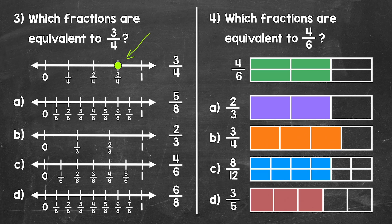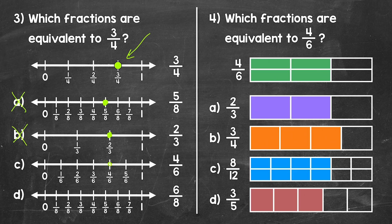Let's go to A, 5 eighths. 5 eighths is right here on the number line. Is 5 eighths equivalent to 3 fourths? Is it in the same place on the number line? No, 5 eighths is not equivalent to 3 fourths. Let's move on to B, 2 thirds. 2 thirds is right here on the number line. Is it at the same place as 3 fourths? No, it's close, but not quite. So 2 thirds is not equivalent. Moving on to C, we have 4 sixths, which is right here on the number line. Is 4 sixths equivalent to 3 fourths? No, it's not in the same place on the number line, so this is not equivalent.